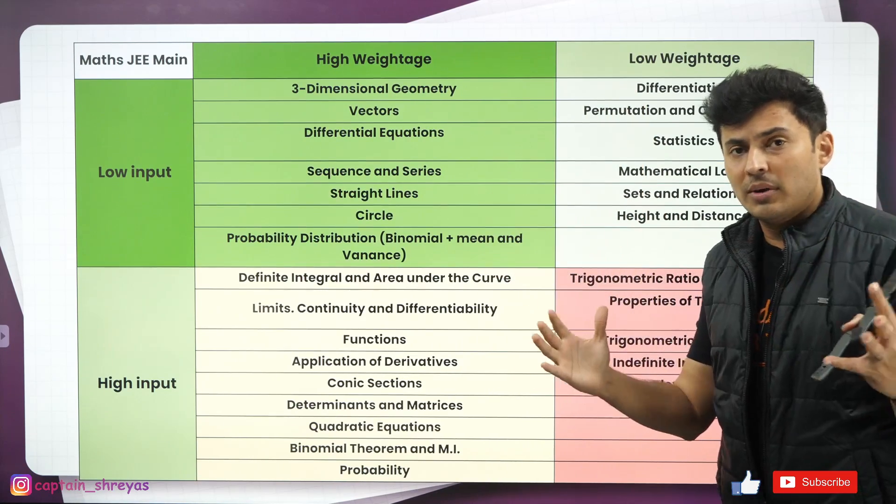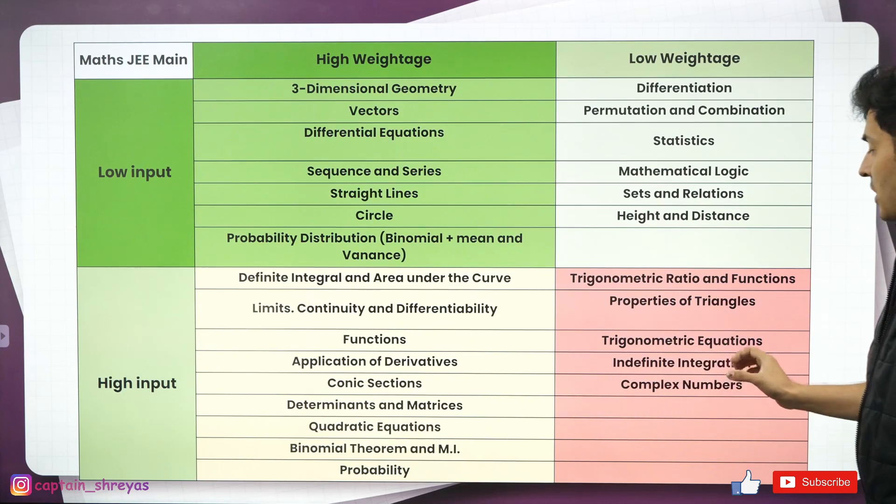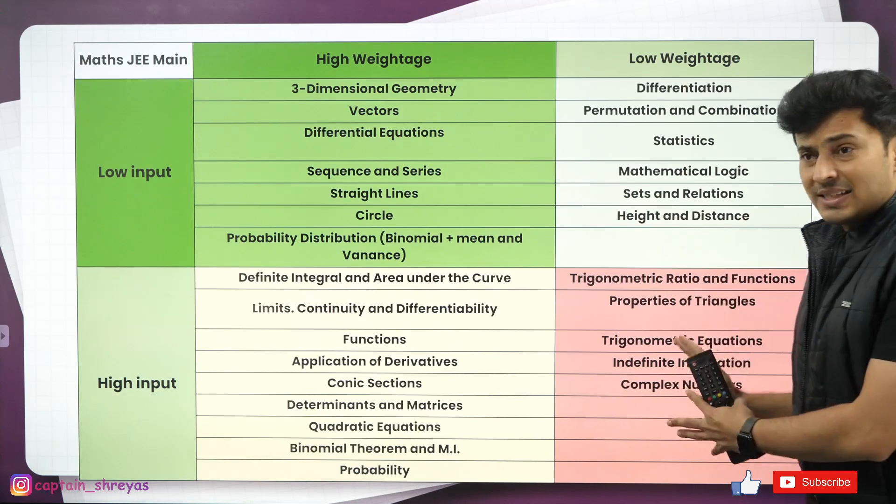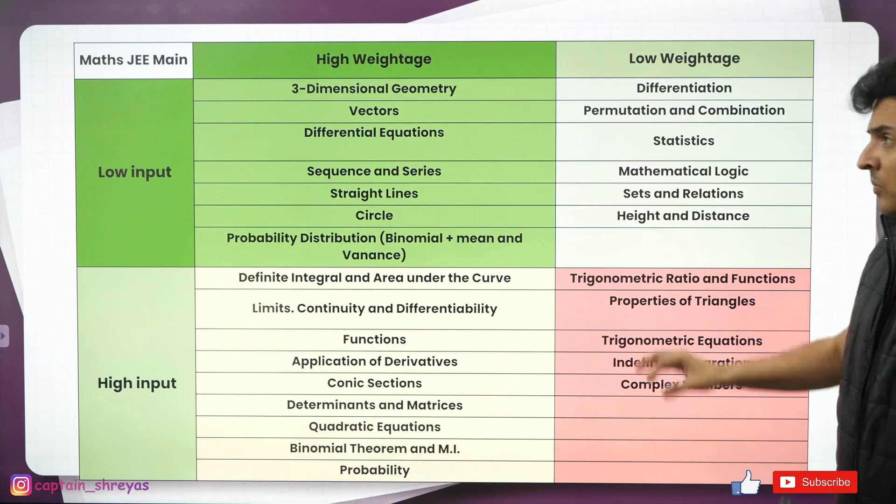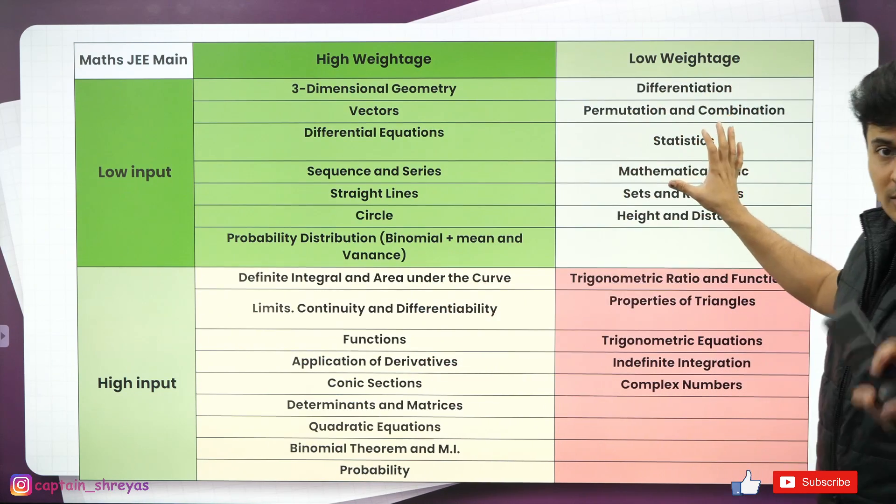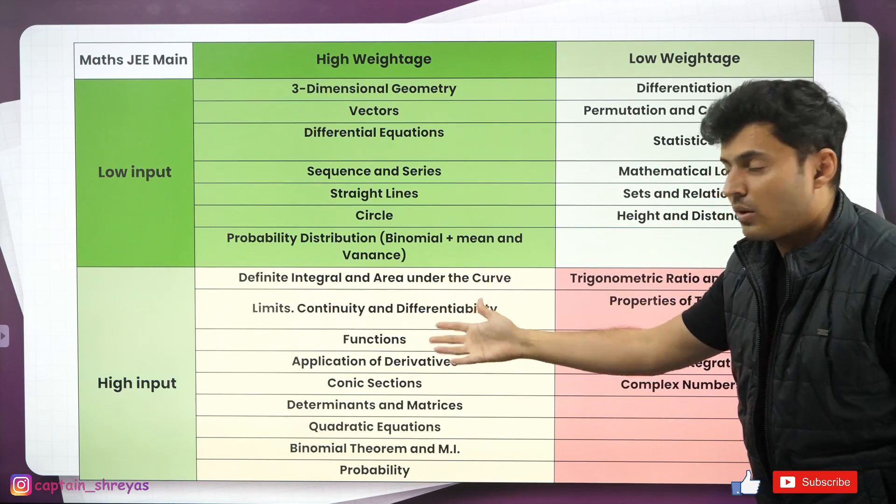Topics which you can skip altogether will be these ones like trigonometric ratios and functions, properties of triangles, trigonometric equations, indefinite integration and complex numbers. You can still get 95 to 97 percentile after skipping these topics. Also remember, after doing this, you need to study this one because the time is less and after that, go to this part because it takes a lot of time.